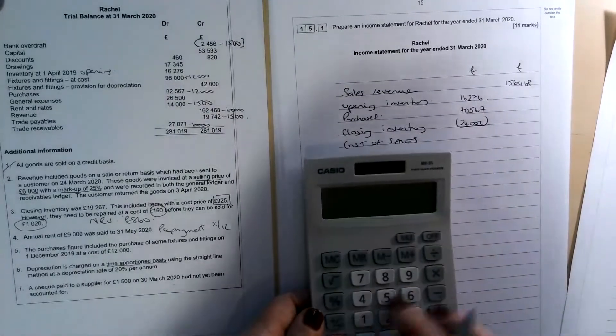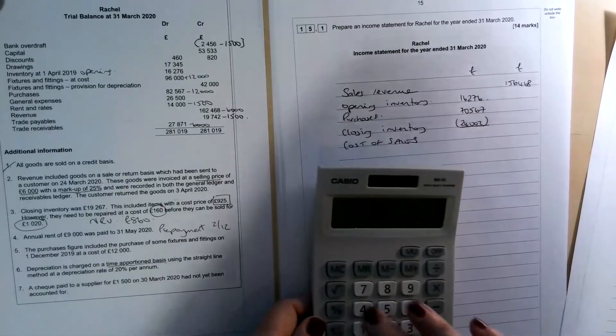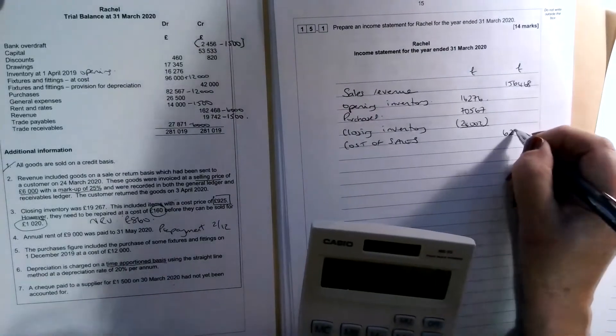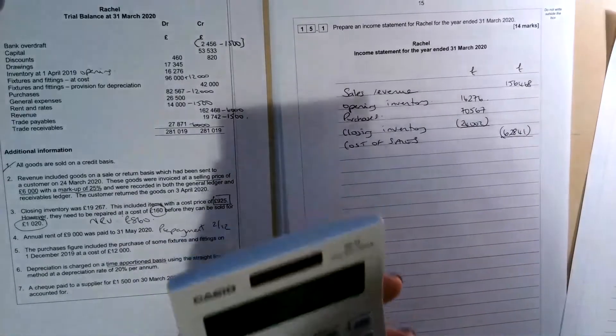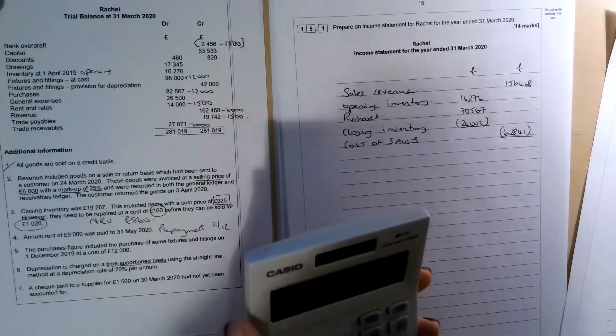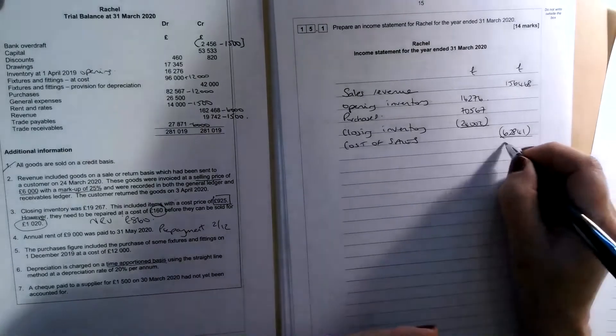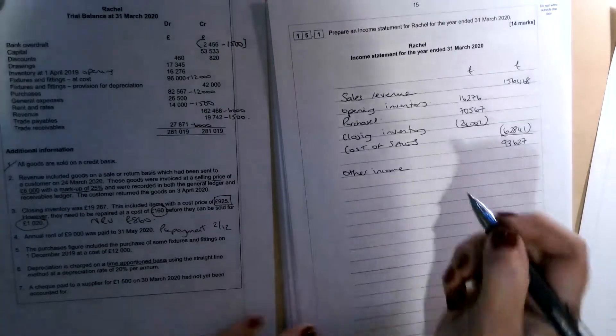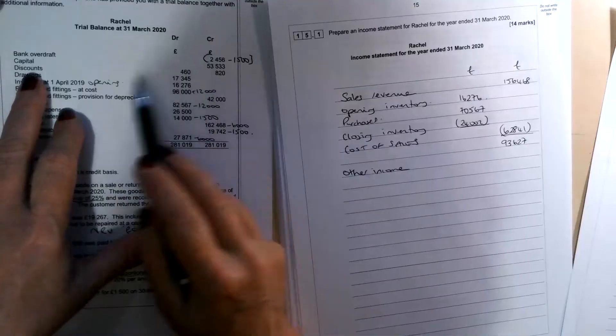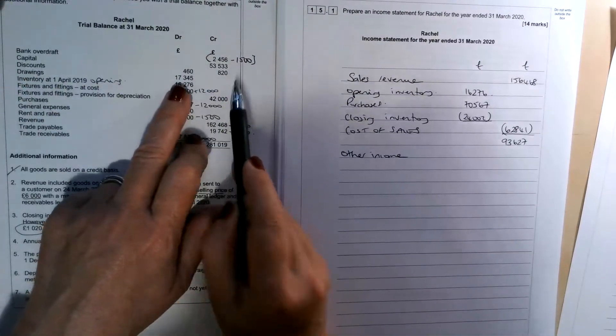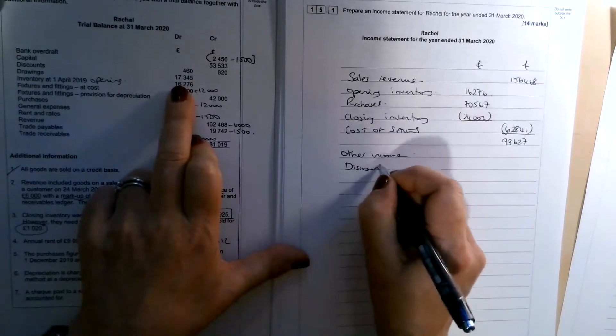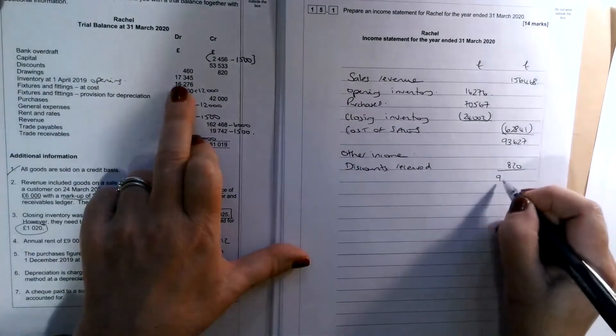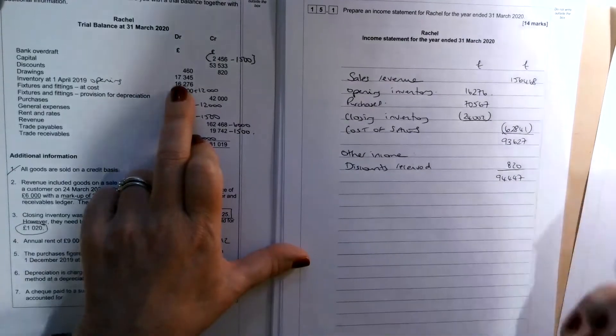Let me find out what they add up to. So £16,276 plus £70,567 plus £24,002 is £62,841. So our gross profit now can be the difference between the £156,468 minus the £62,841, which is £93,627. Then we have to look for any other income. So anything that says received, not to be confused with receivables, we haven't actually got anything that says received. But if you remember the discounts, they gave us the discounts allowed and the discounts received. So we need to stick that in.